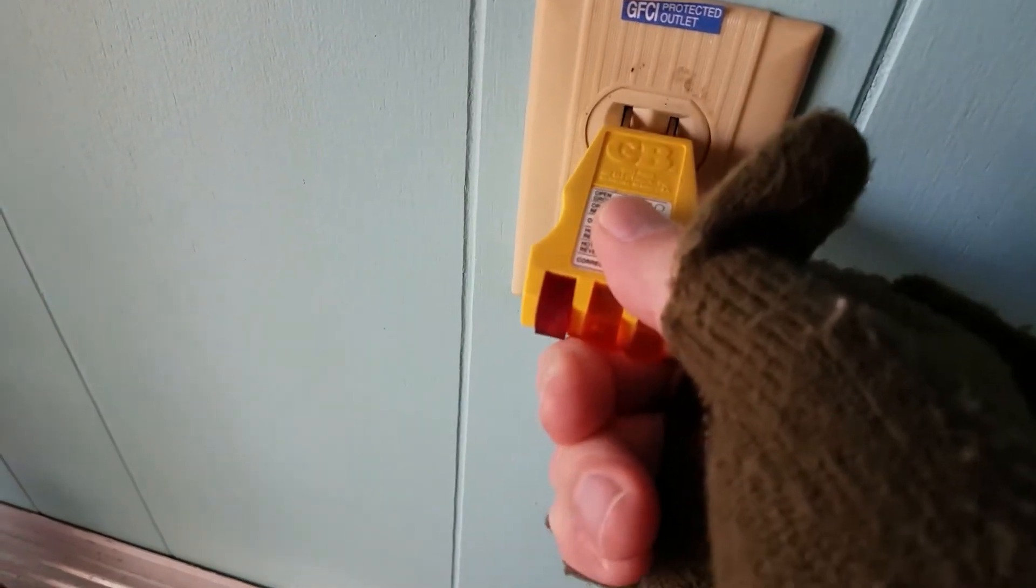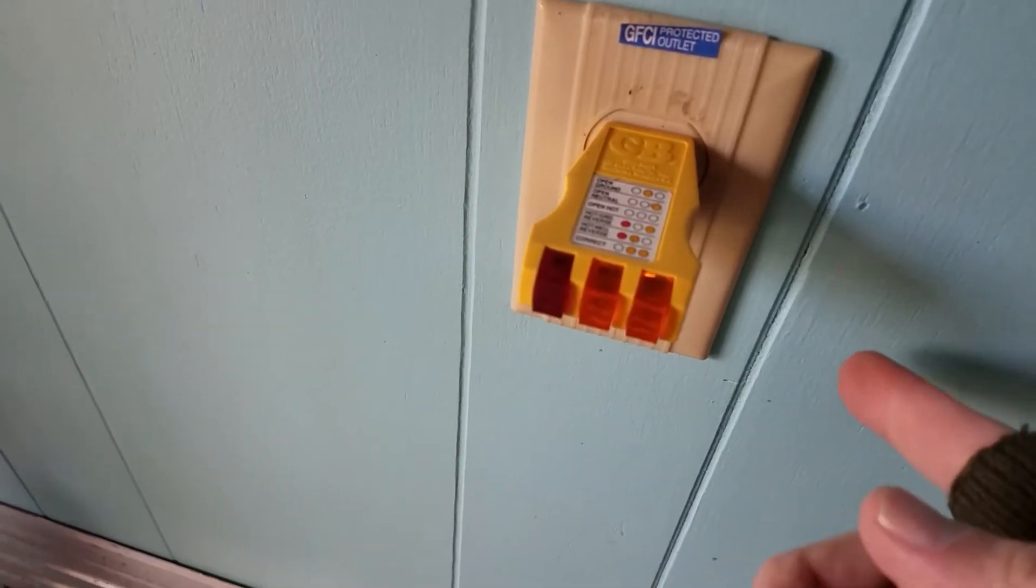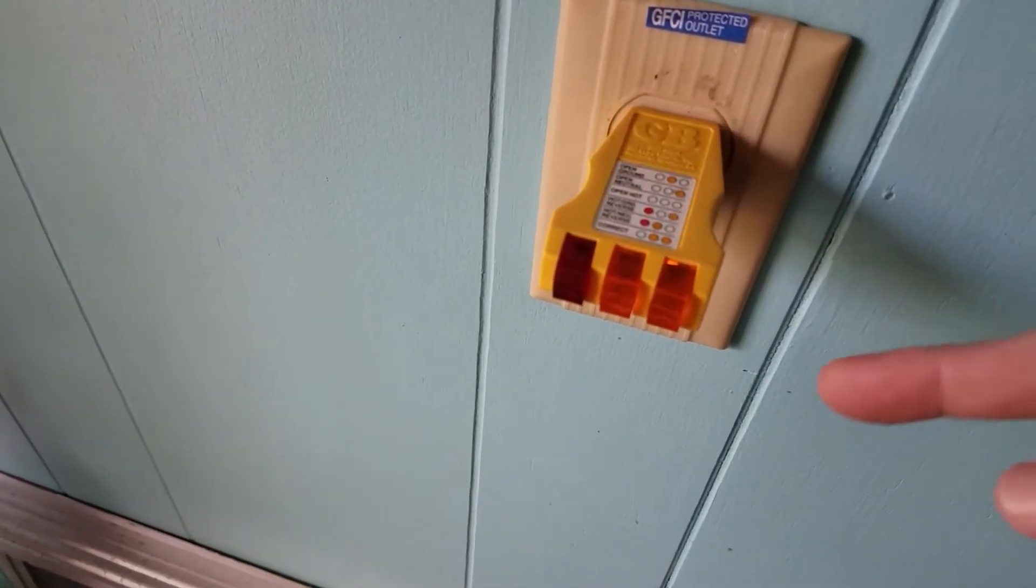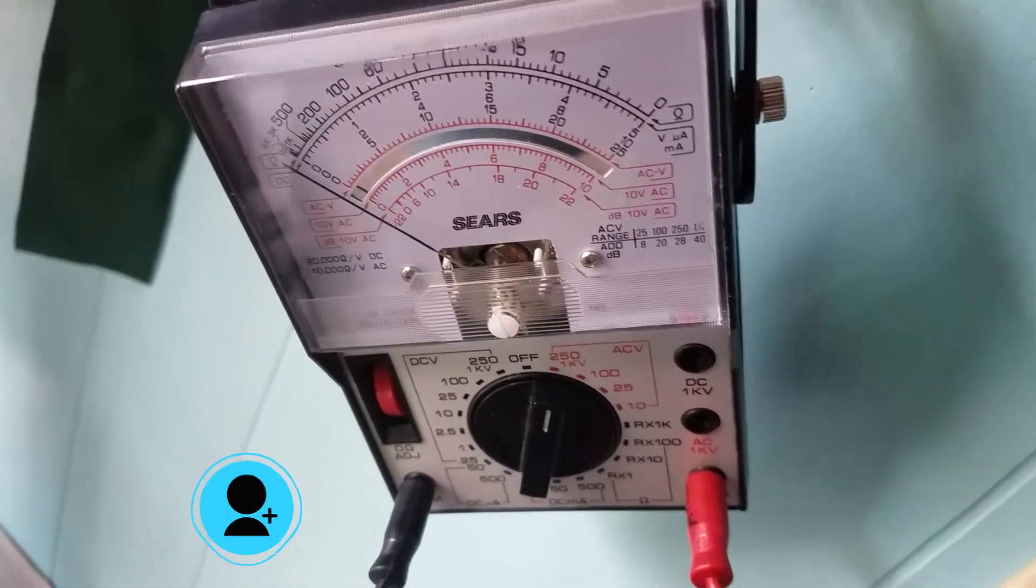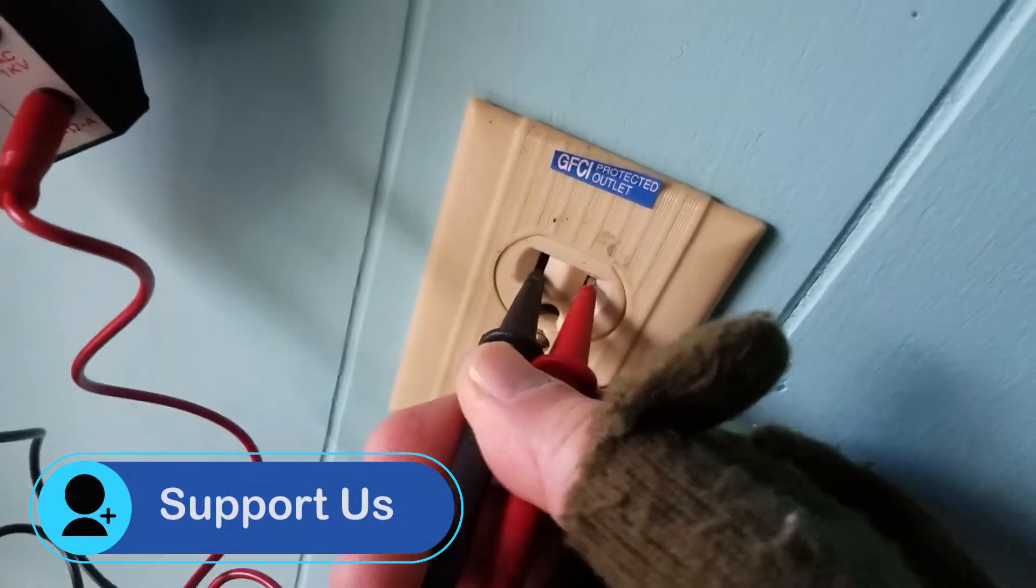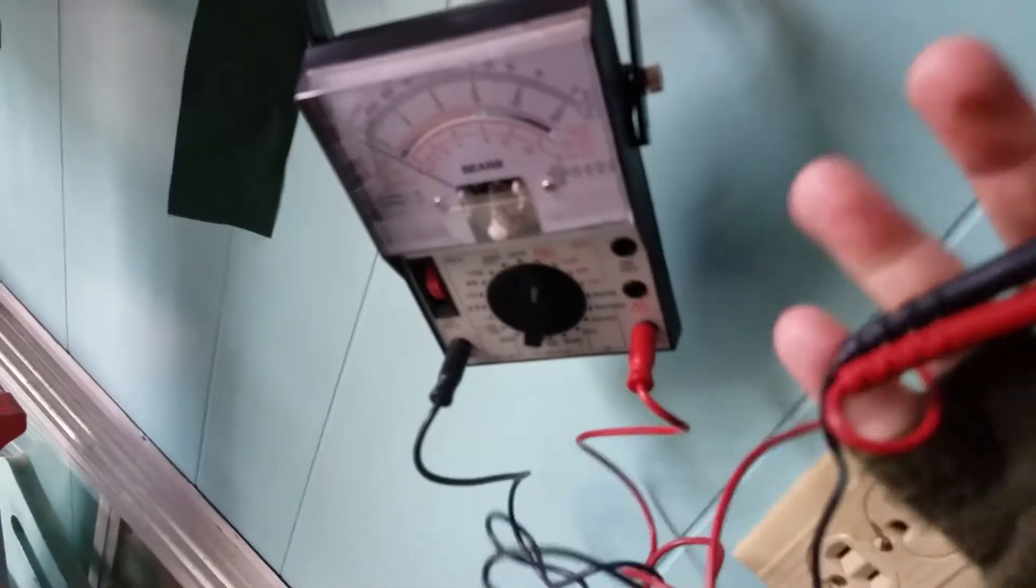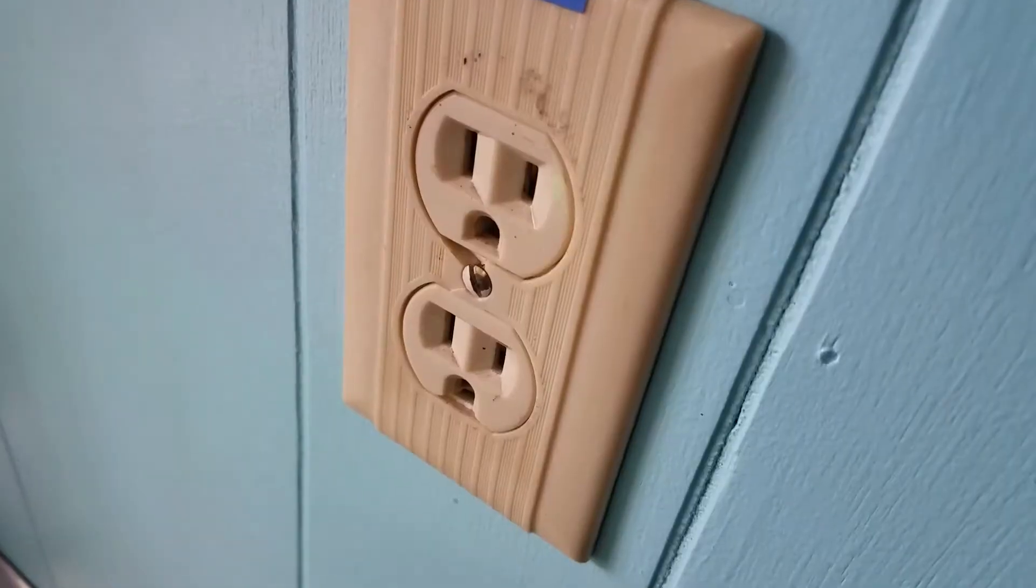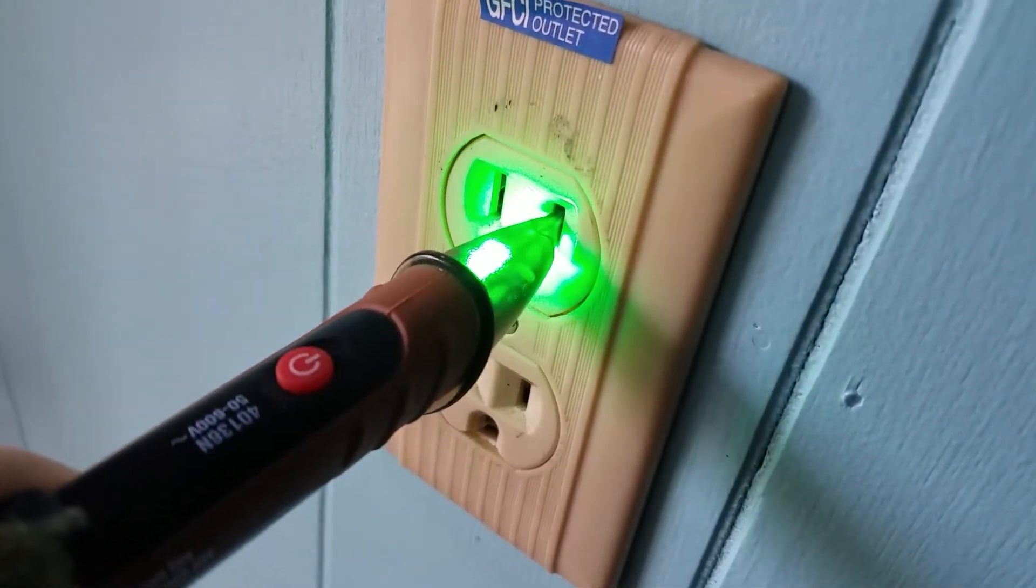We've turned off the circuit breaker. We put in our socket tester and we get no lights indicating one of two things: either no power or an open hot. With the voltmeter plugged in we get zero readings, so we're pretty sure this circuit is dead.